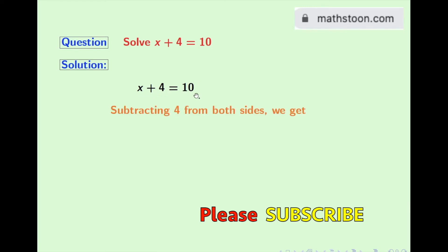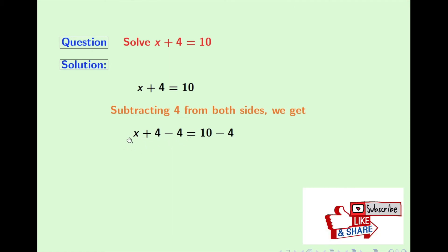So doing that, we get x plus 4 minus 4 equals 10 minus 4. Now simplifying the left hand side, we have x. And on the right hand side, we have 10 minus 4.